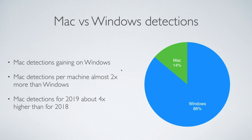What we did was look at the number of detections per endpoint — per machine — and on average, for each Mac, how many threats did we detect versus the same number for Windows. We found that detections per machine were almost two times higher than Windows. Obviously this is just Malwarebytes data, so we can't say whether this is universal, but this is what we saw. We also saw that Mac detections in our data were about four times higher in 2019 than they were in 2018.